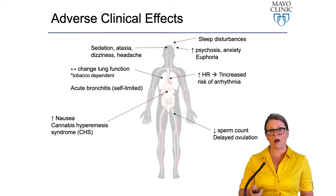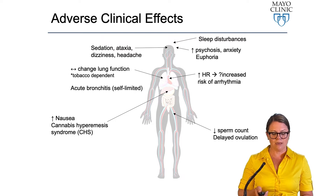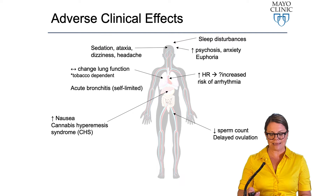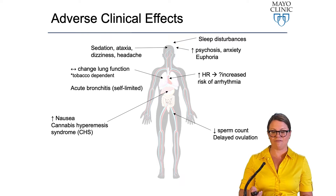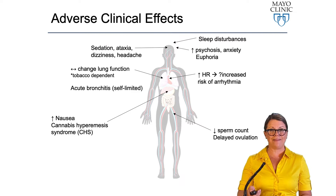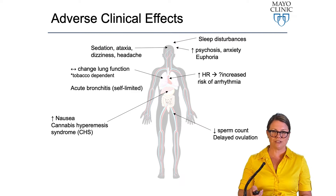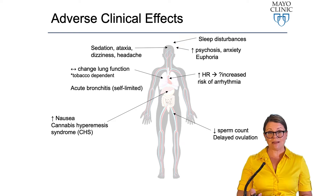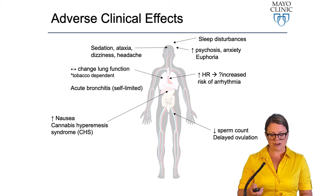There can be increasing sleep disturbances — even though patients use cannabis for improved sleep quality, chronic use is actually associated with disrupted sleep patterns. There's also increased sedation, ataxia, dizziness, headaches, increased psychosis, anxiety, and feelings of euphoria. There's also a risk of increased heart rate, and some small studies show a possible increased risk of arrhythmias.